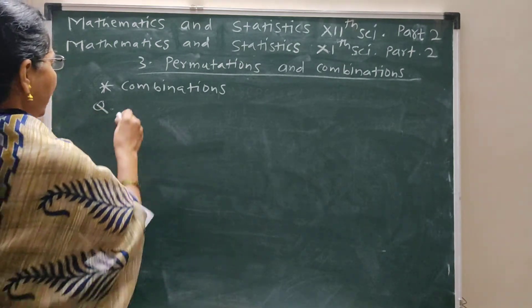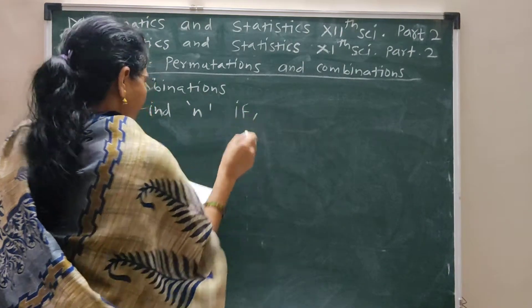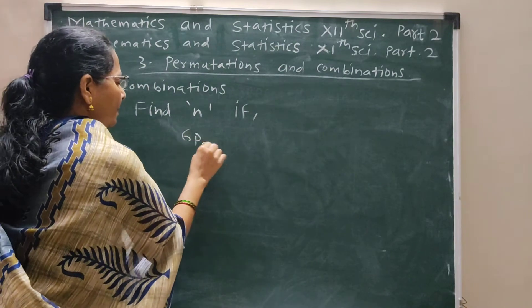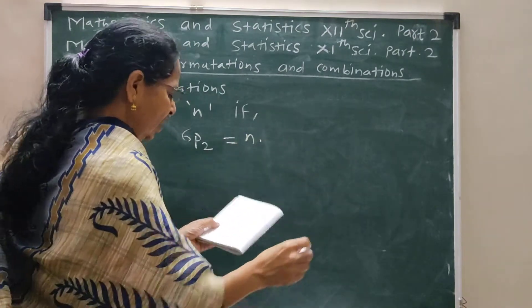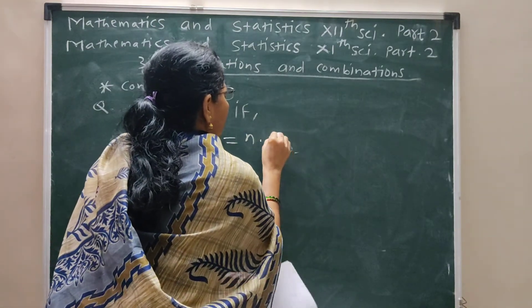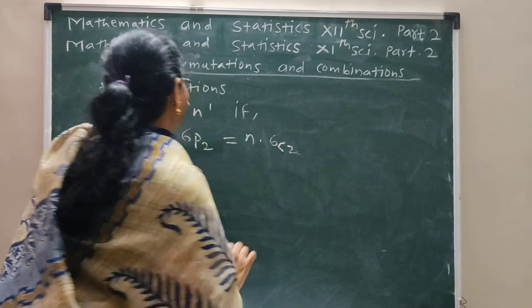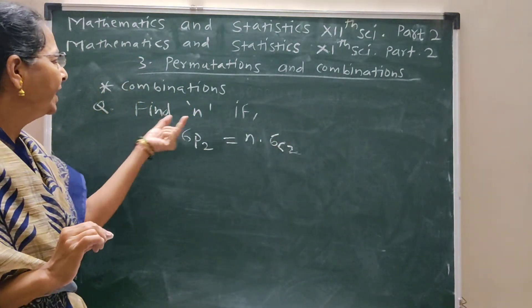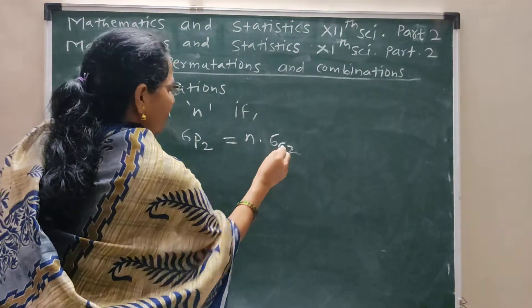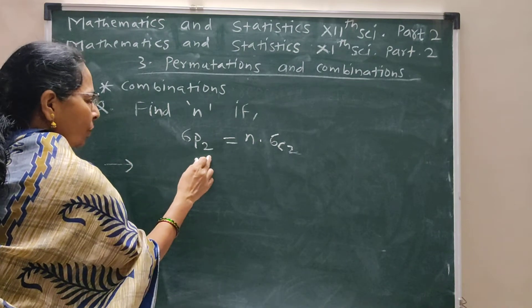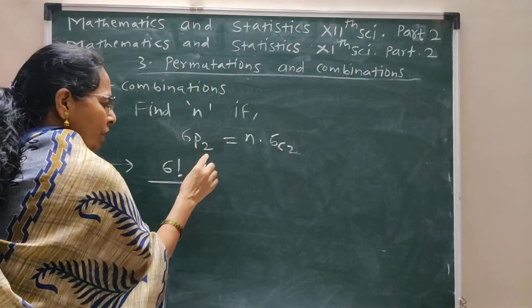Find N if 6P2 is equal to NC2. Use the proper formula. Therefore, 6P2 equals 6 factorial divided by 6 minus 2 factorial, which is 4 factorial.